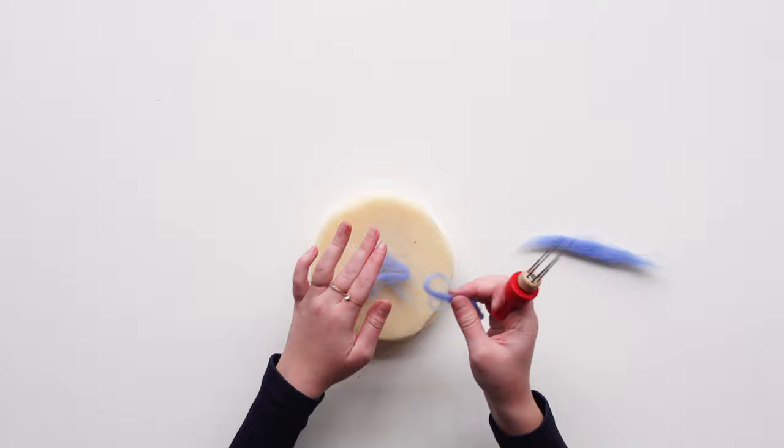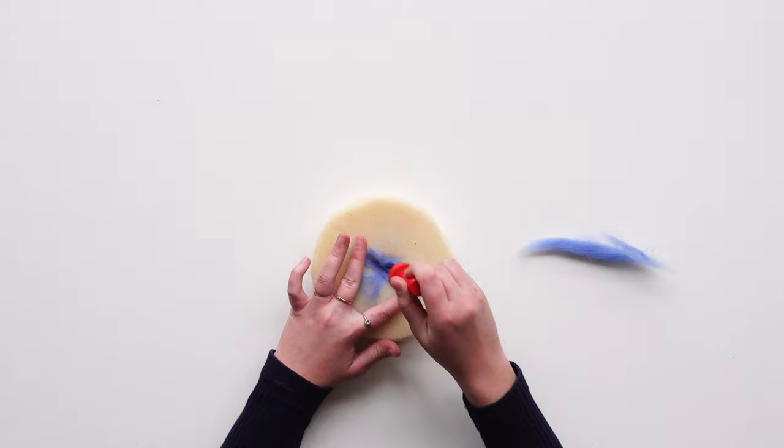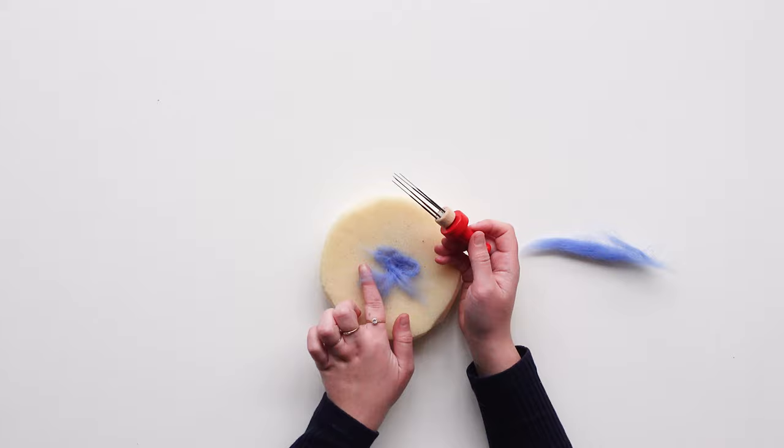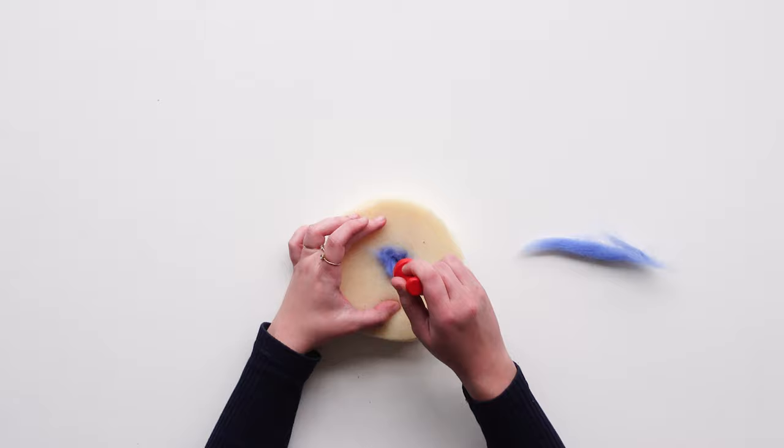With the pillow underneath the needles won't break. You push the needles multiple times into the fibers so the fibers get stuck into each other which creates a piece of felt as a patch. This can only be done with woolen fibers. First you start in the middle and then later on you push the sides over each other.